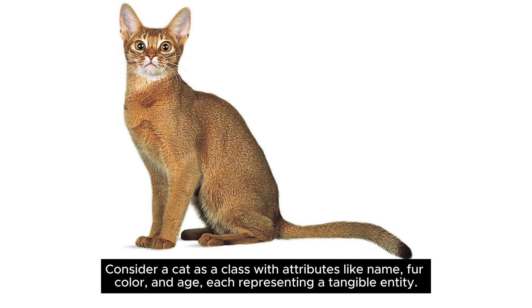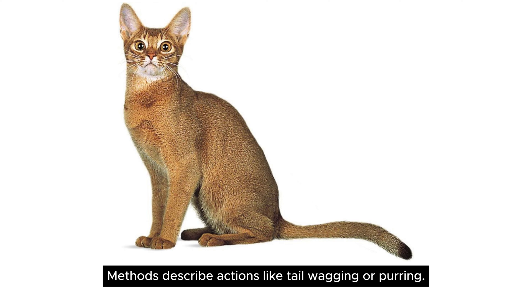Consider a cat as a class with attributes like name, fur color, and age, each representing a tangible entity. Methods describe actions like tail wagging or purring.